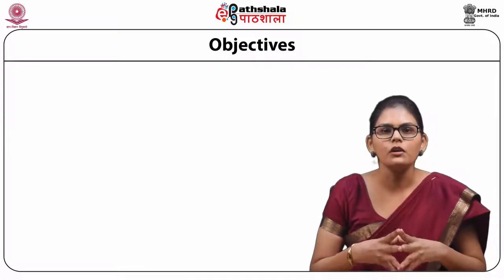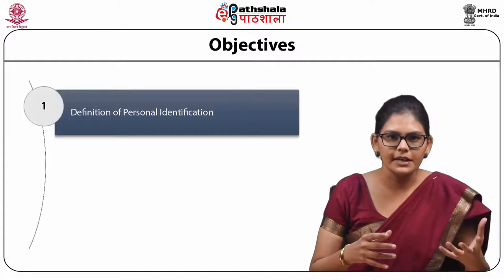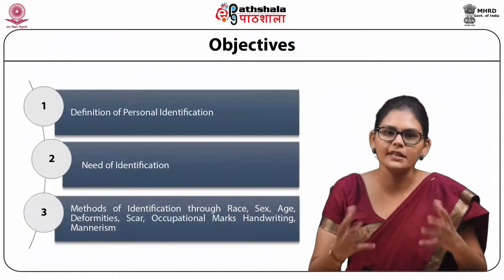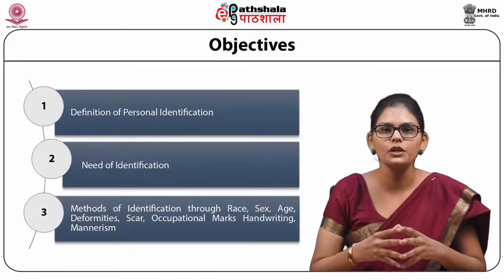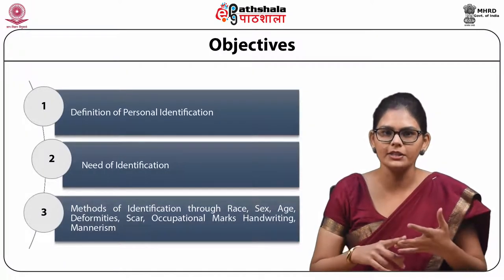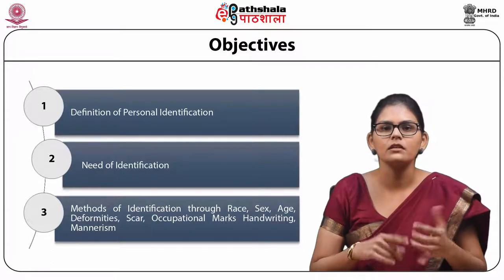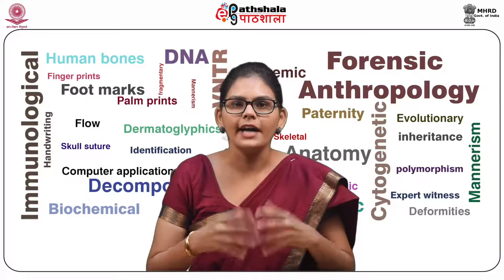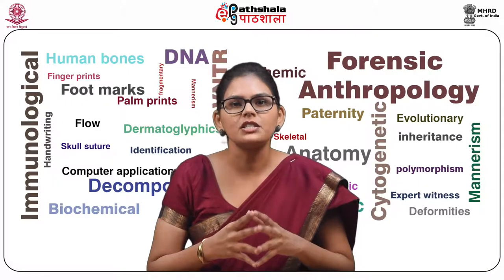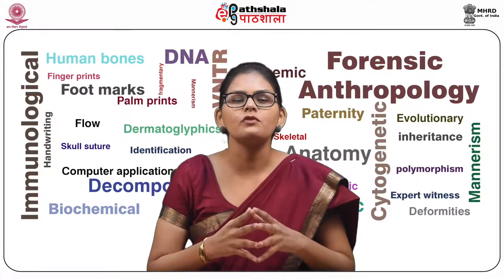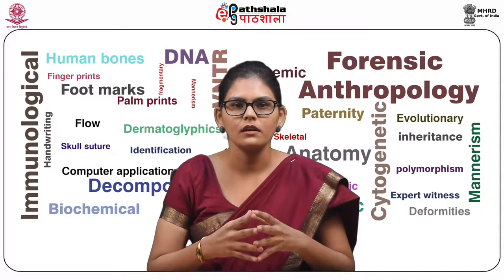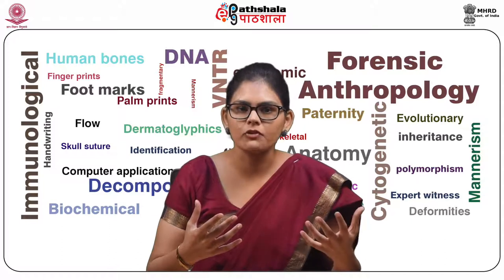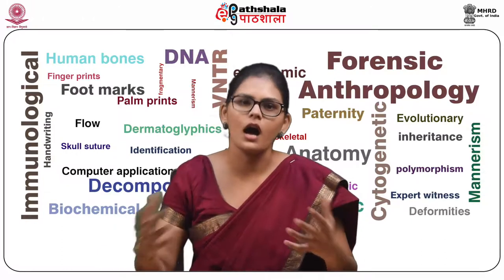In this module, you'll learn about personal identification, the need for identification, and different methods of identification which include race, age, sex, deformities, scar, occupational marks, handwriting and mannerism. Identification is the establishment or determination of the individuality of a person. In this process, the characteristics by which one person is distinguished from others are determined.